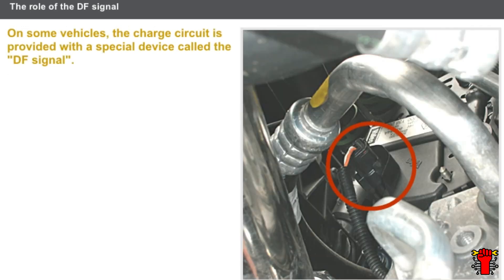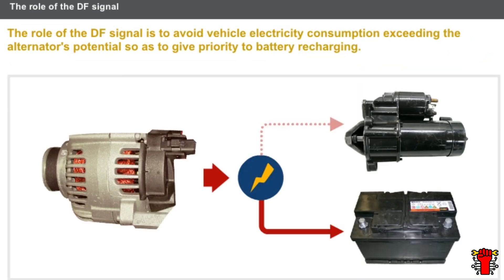On some vehicles, the charge circuit is provided with a special device called the DF signal. This signal, emitted by the alternator, provides alternator supply information. The role of the DF signal is to provide alternator available power information, making it possible to avoid vehicle electricity consumption exceeding the alternator's potential, so as to give priority to battery recharging.